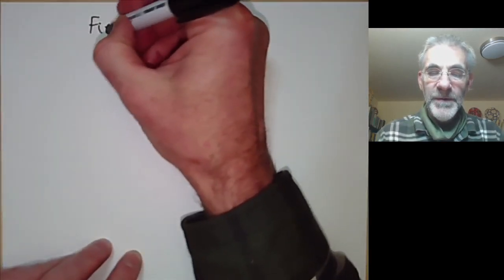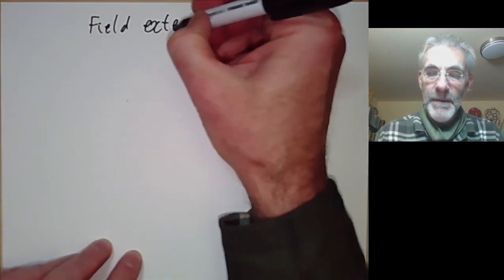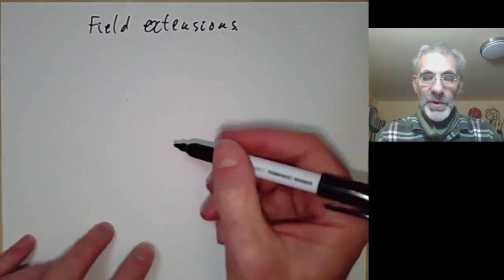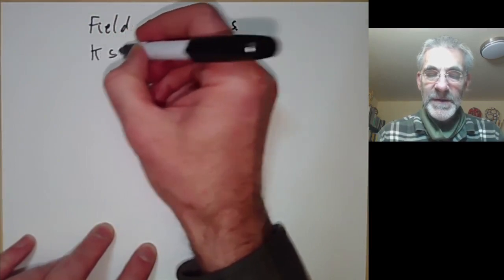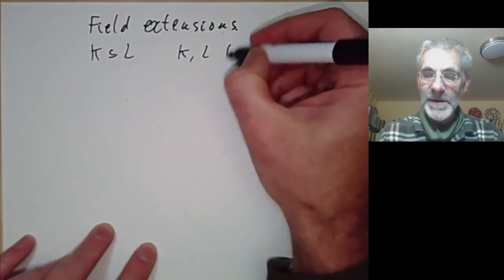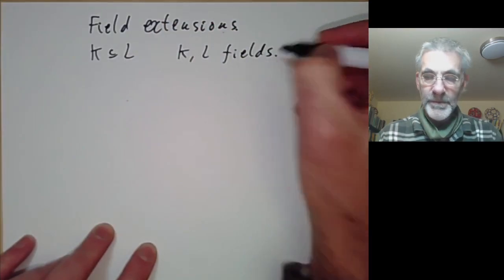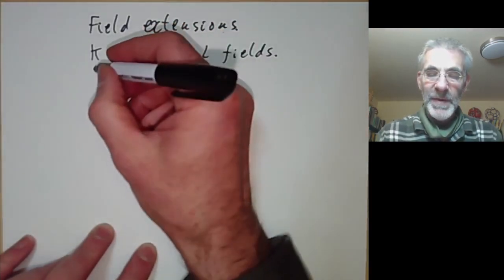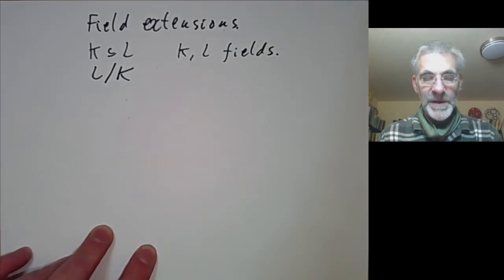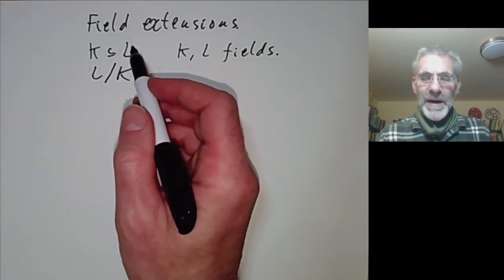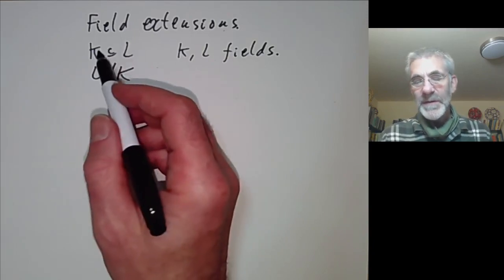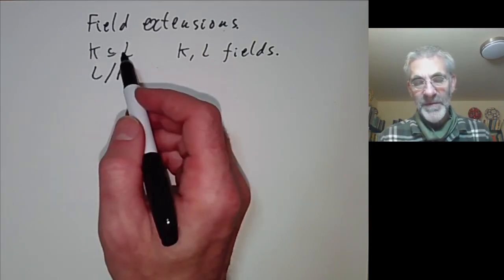This lecture is part of an online course on Galois theory and will be a sort of review of field extensions. We recall that a field extension just means two fields, one of which is contained in the other. So K and L are going to be fields, and this is sometimes denoted by L over K. Galois theory is mainly about the study of fields, but it turns out to be really useful to study pairs of fields, or field extensions.